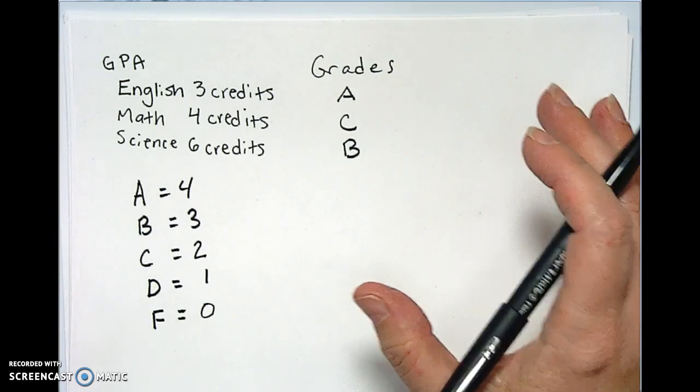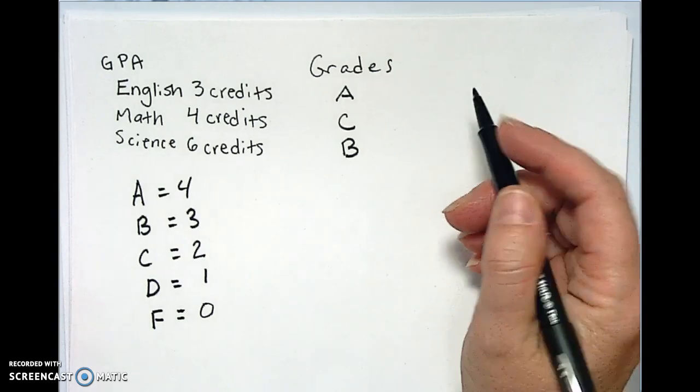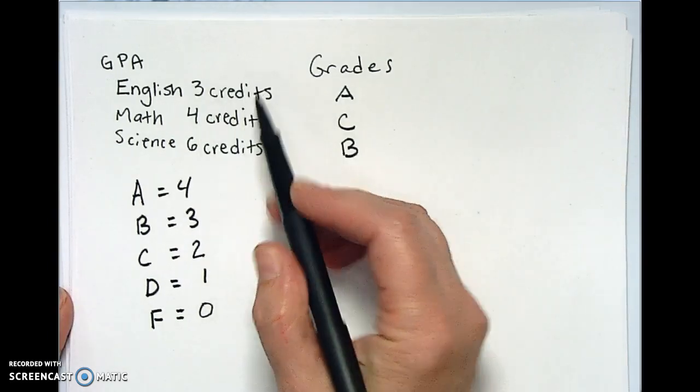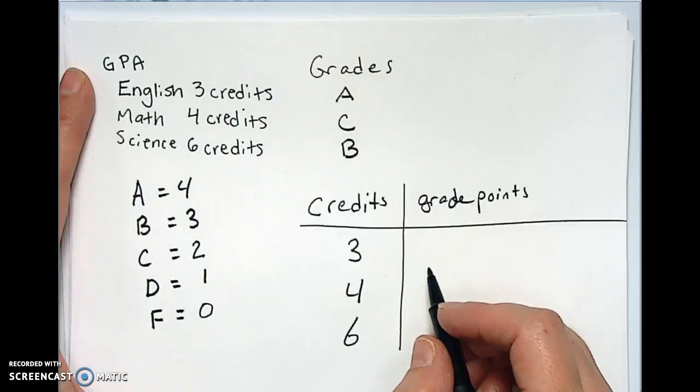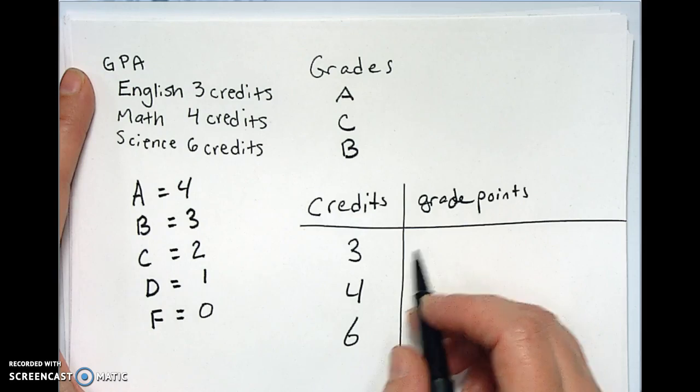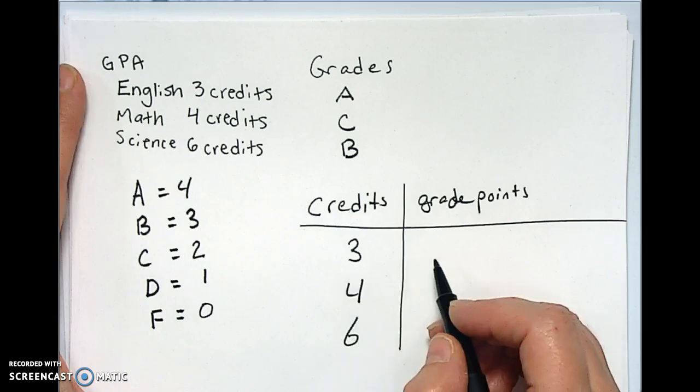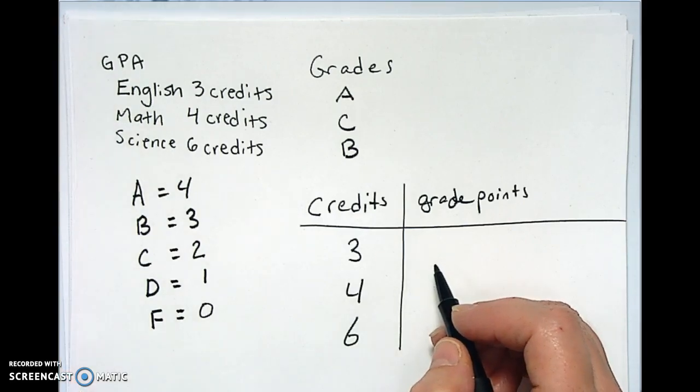So let's calculate this. It's called a weighted mean, but we need to take into account the number of credits and the letter grade here. So we're going to make a little table. Alright, here's our little table, our three credit class. We got an A, so what numeric value does an A carry? A four.